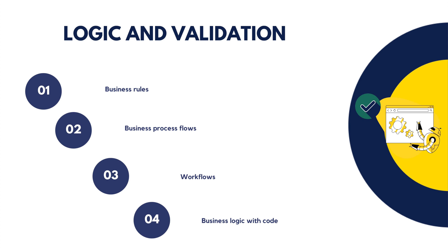Now let's discuss logic and validation. Tables within Dataverse can take advantage of rich server-side logic and validation to ensure data quality and reduce repetitive code in each app. Business rules validate data across multiple columns and tables and provide warning and error messages regardless of the app used to create the data. Business process flows guide users to ensure they enter data consistently and follow the same steps every time — these are currently only supported for model-driven apps, not canvas apps in Power Apps. Workflows allow you to automate business processes without user interaction, and business logic via code supports advanced developer scenarios to extend the application directly through code.